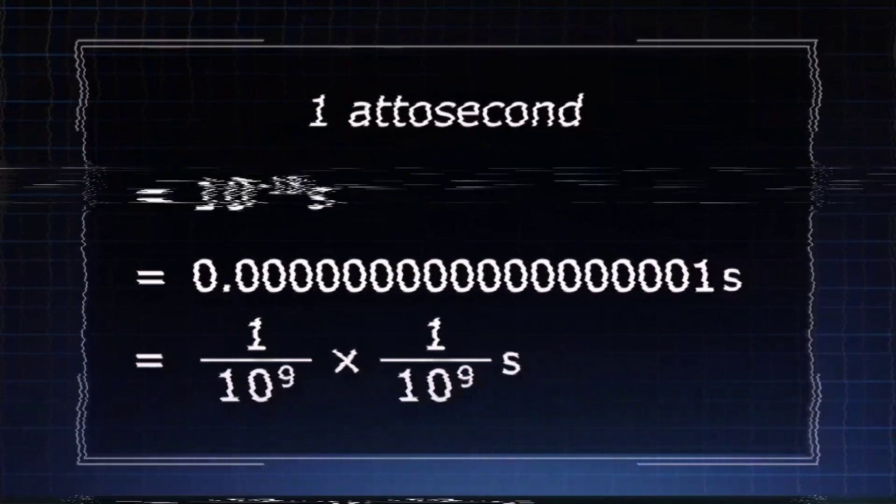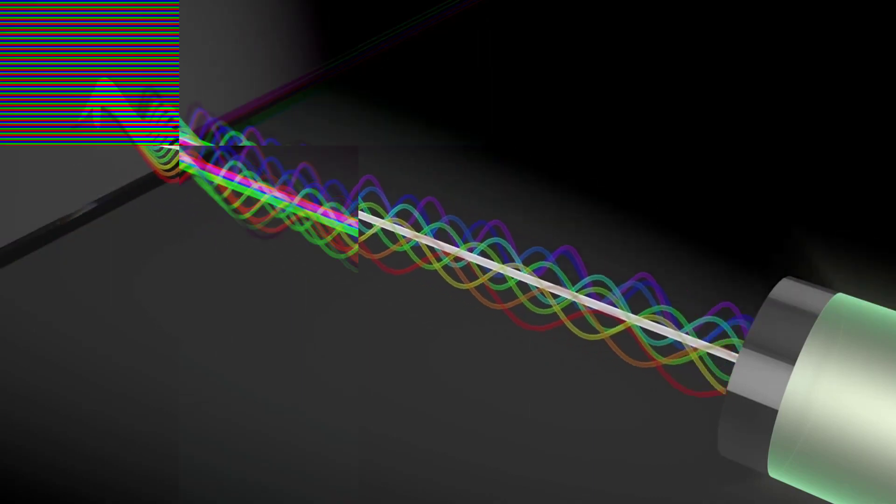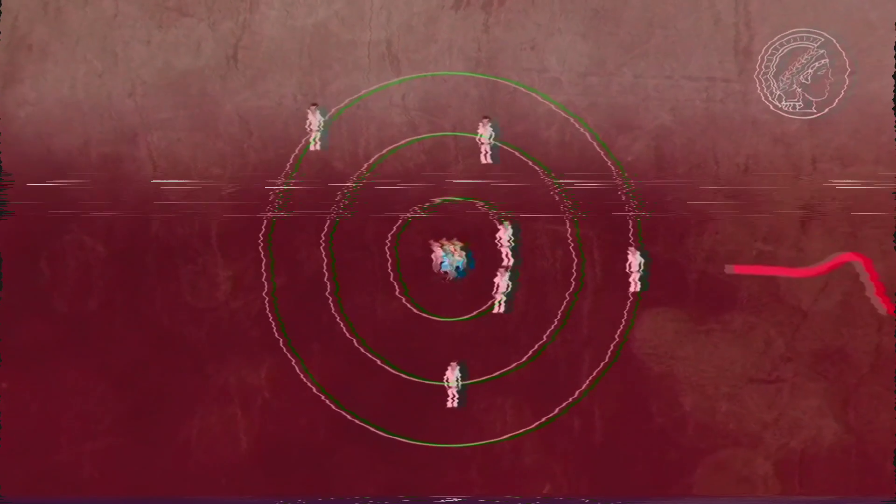An extremely short time period. We can think of this as barely an instant in time. This is the time it takes light to travel across the diameter of an atom.